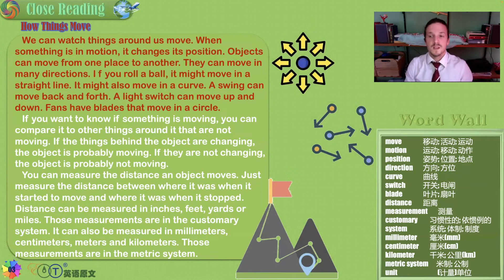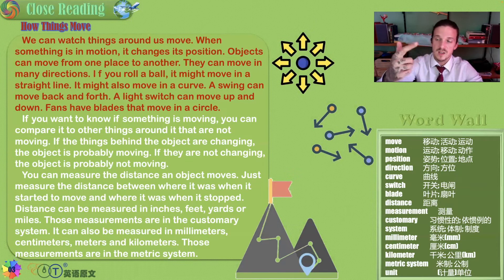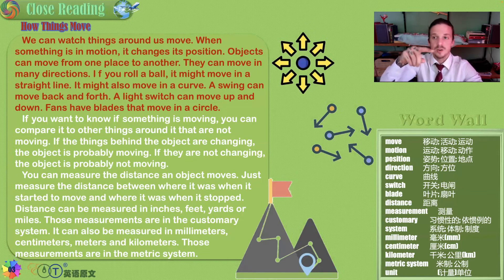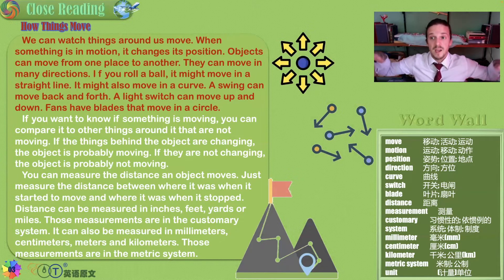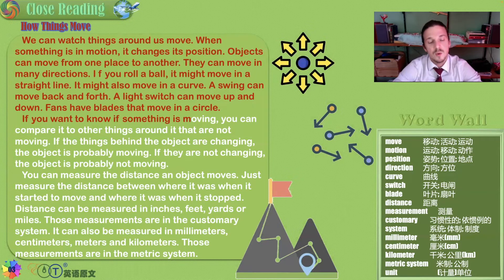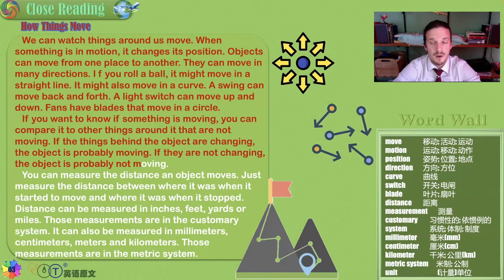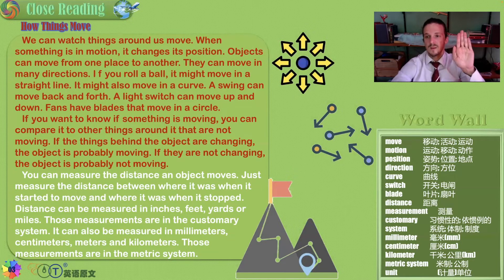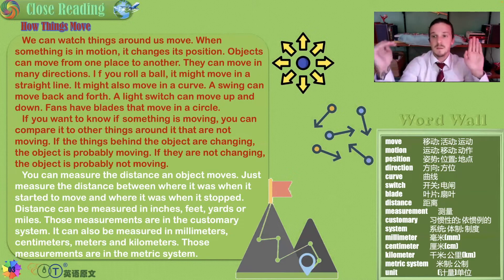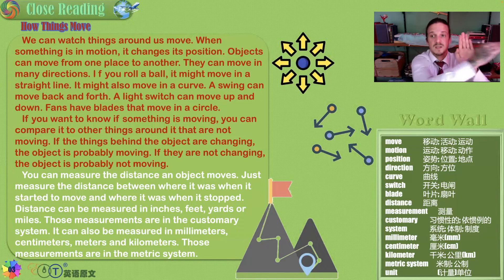Think about the different ways objects move. A ball is round and it rolls. A square moves one face at a time. A light switch clicks. Sands go around and around and they oscillate — this is called oscillation — and they also rotate. Rotation, like the propeller on a plane. If you want to know if something is moving, you can compare it to other things around it that are not moving. This hand is not moving, therefore we know this hand must be moving because it's changing its position over time.